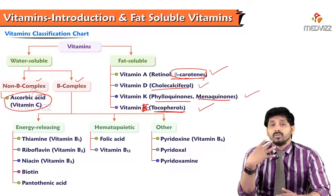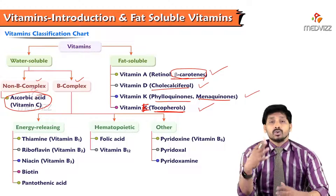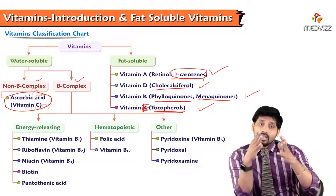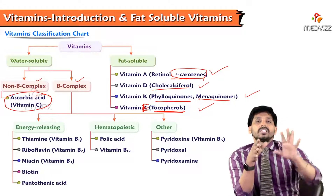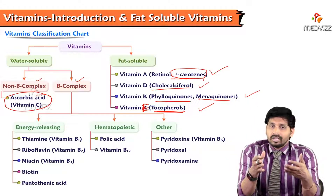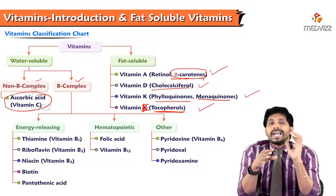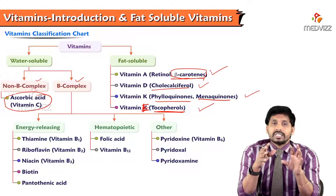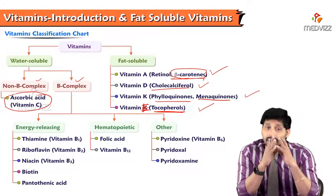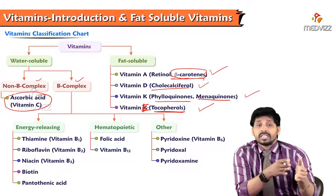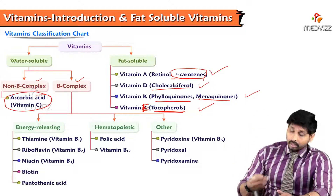Energy-releasing refers to carbohydrate metabolism. The main source of energy in our body is glucose; when glucose undergoes glycolysis, the TCA cycle, and the electron transport chain, we get ATP. Throughout these three processes, certain B complex vitamins assist the enzymes involved, since enzymes require coenzymes or cofactors for their activity — and that coenzyme role is provided by B complex vitamins.